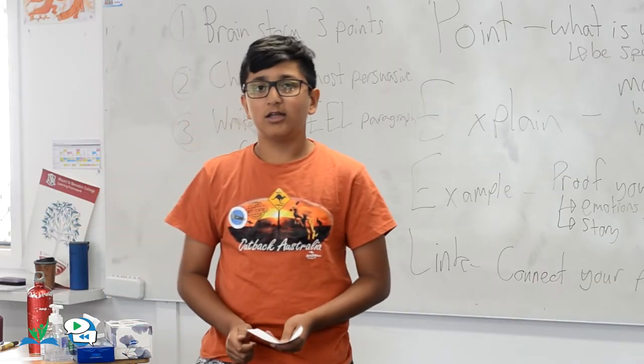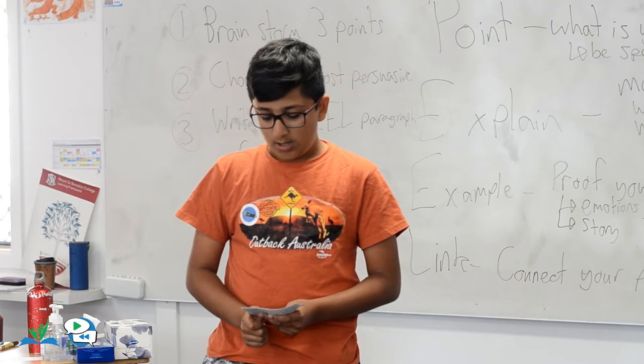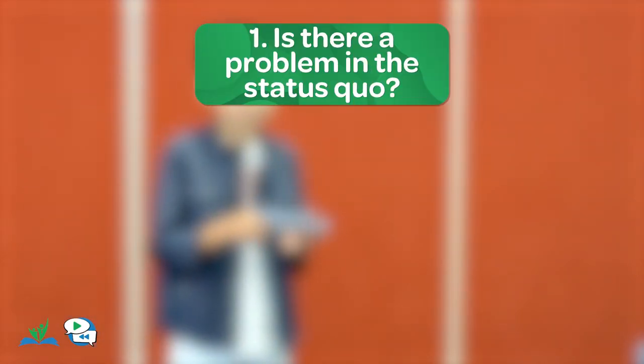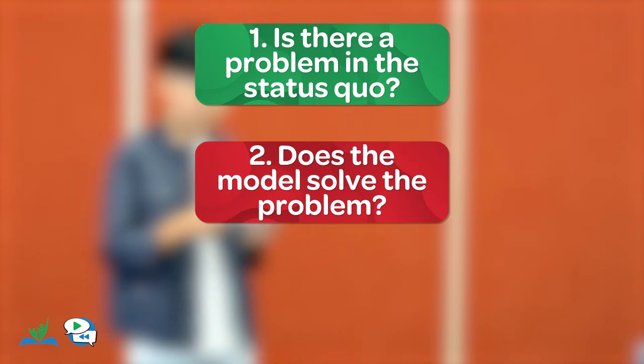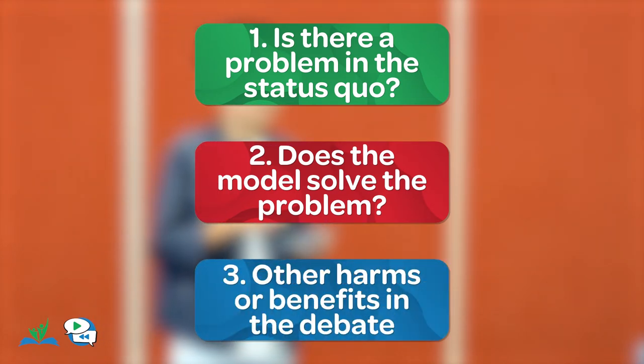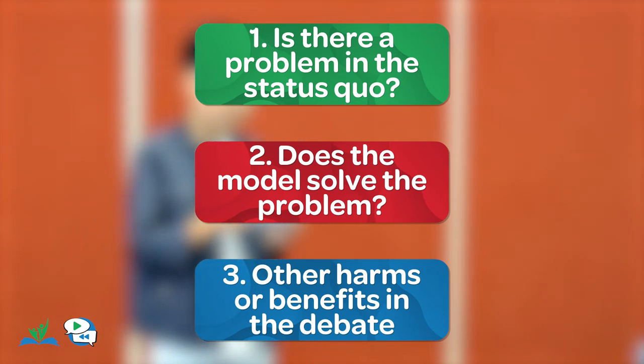If all else fails and you're struggling to come up with themes — or especially if you're just trying thematic rebuttal for the first time — falling back onto a set of standard themes that you can use across many different debates is really useful. These work especially well in should debates. The three themes you'll usually come across are: number one, is there a problem with the status quo? Number two, is the model effective in solving that problem? And number three, looking at any other benefits or harms that may come up in the debate. Most debates cover those three areas.